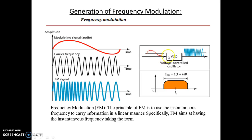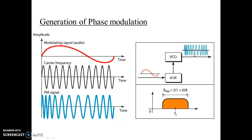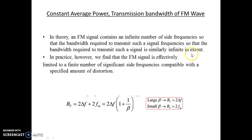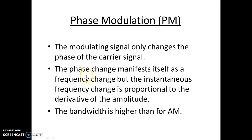The message signal is given to the VCO and the carrier signal is also applied to the VCO. The oscillations of the VCO are controlled by the amplitude of the message signal, so the output of the VCO is a frequency modulated signal. In this video, we will be seeing the generation of phase modulation.